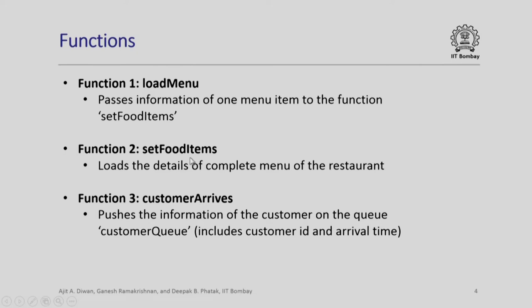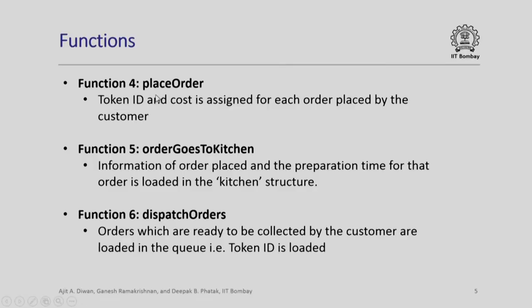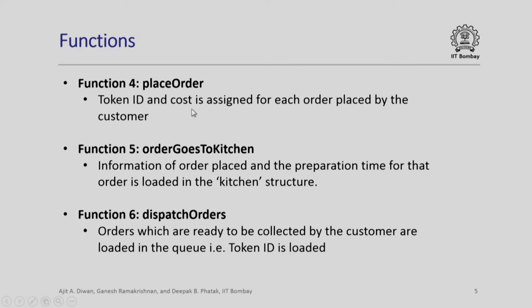Let us look at the functions we need to write. First, the back-end information about the restaurant: we will have a load_menu function which passes information of one item to the function set_food_item. The set_food_item function loads the details of the complete menu. There is one more function to represent the arrival of a customer, which simply pushes the customer's information onto the customer_queue, including customer ID and arrival time. Another function we require is place_order, which generates a token ID and cost assigned for each order placed by the customer. In actual practice, an order would contain many details, but for this simple illustration we will just store token ID and cost.